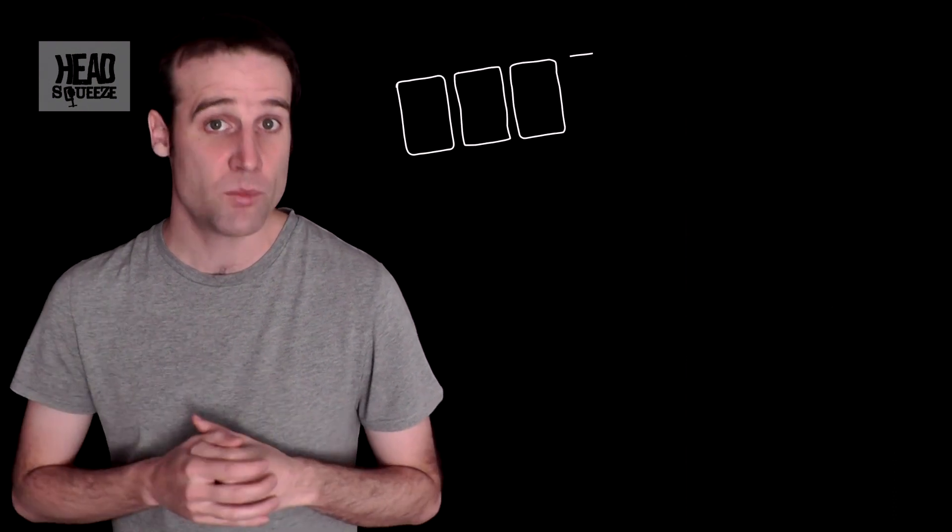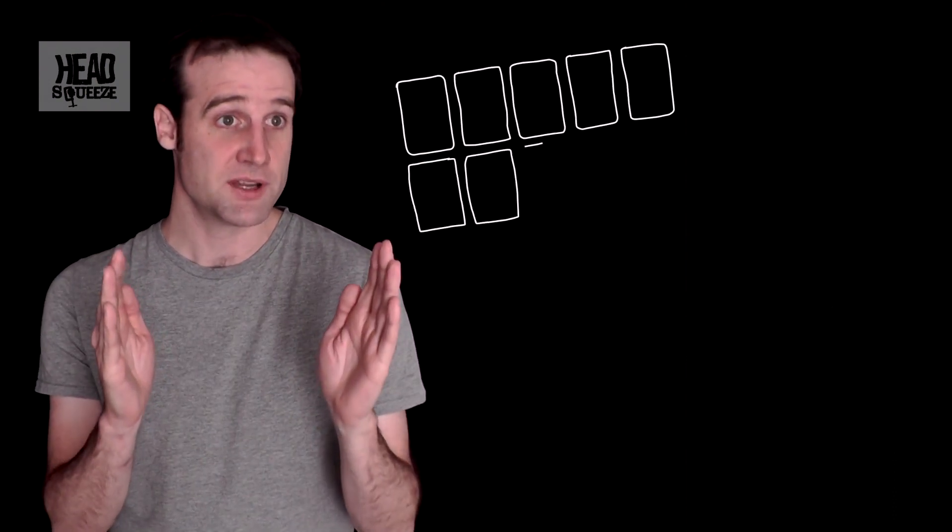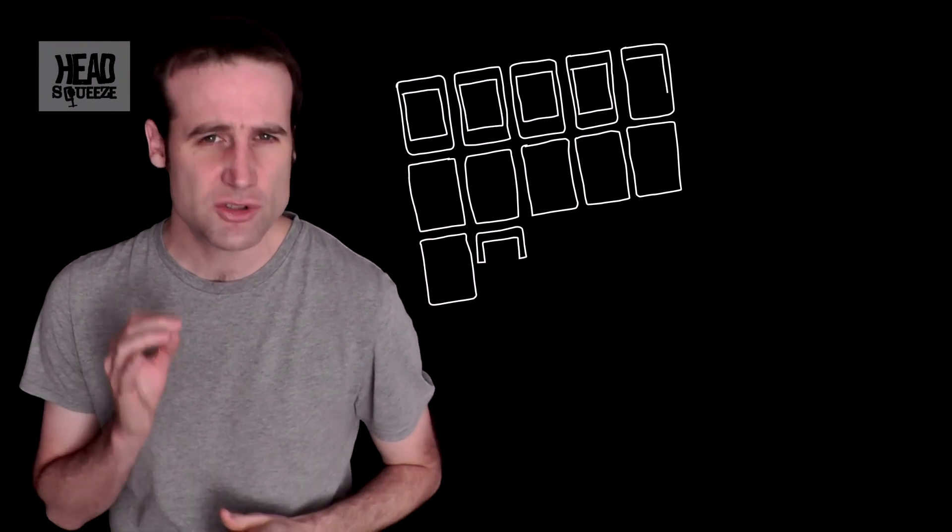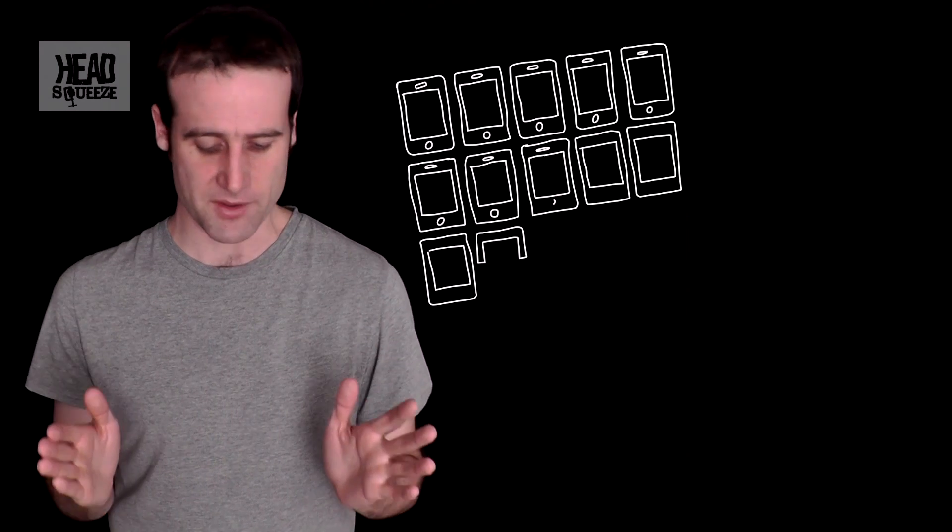In fact, at 1,136 pixels across by 640 pixels high, an iPhone screen has so many pixels that if you had 11 and a half of them,